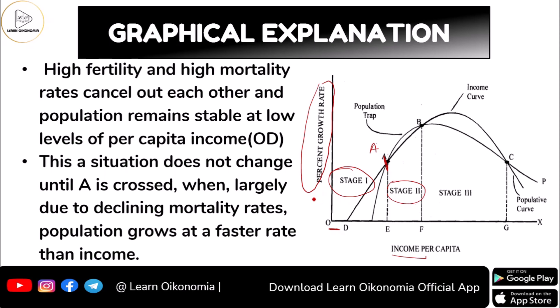Whenever you are able to cross point A, you enter Stage Two. This mainly happens due to a decline in the mortality rate. Here the population would be growing faster than the income, and this situation will not change until point A is crossed. Largely due to the declining mortality rate, population grows at a faster rate than income.